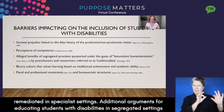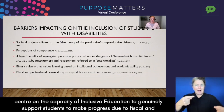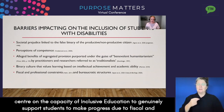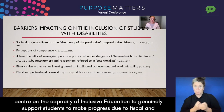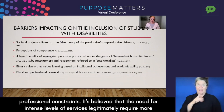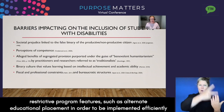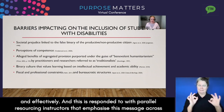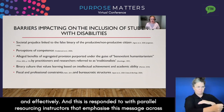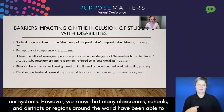Additional arguments for educating students with disabilities in segregated settings center on the capacity of inclusive education to genuinely support students to make progress due to fiscal and professional constraints. It's believed that the need for intense levels of services legitimately require more restrictive program features such as alternate educational placement in order to be implemented efficiently and effectively, and this is responded to with parallel resourcing and structures that emphasize this message across our systems.